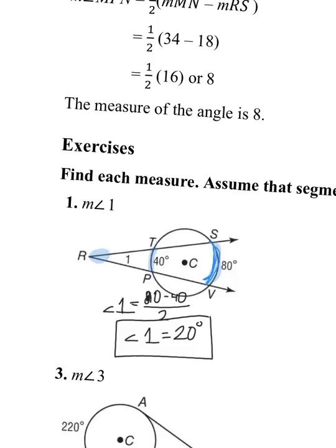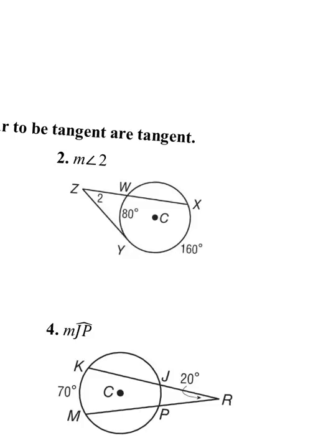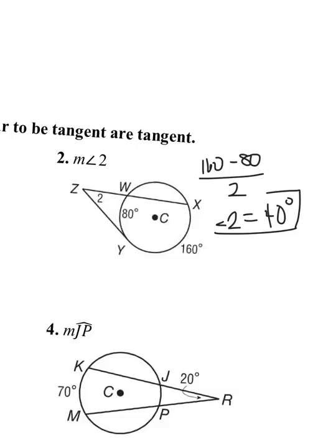Now, question number two: you have a tangent and a secant. The same rules still apply — take the large arc minus the small arc, divide by two, and that gives you your exterior angle. So the answer is 40 degrees.